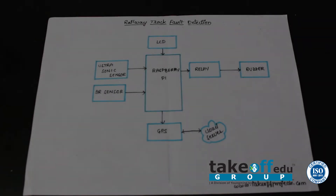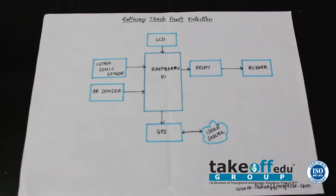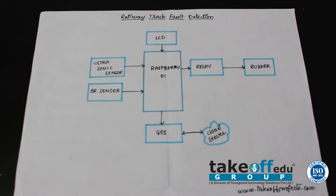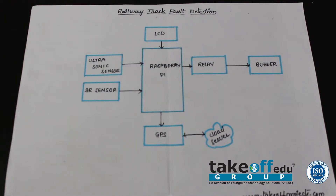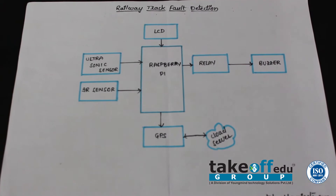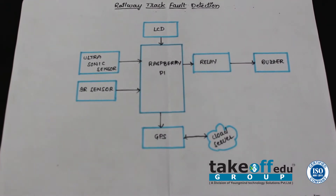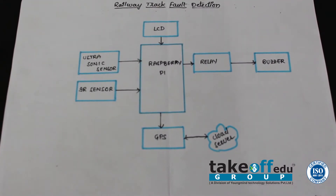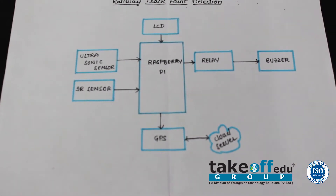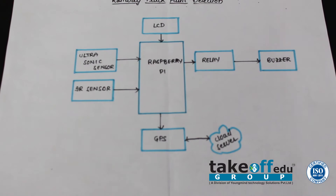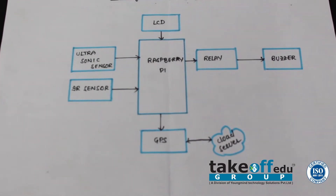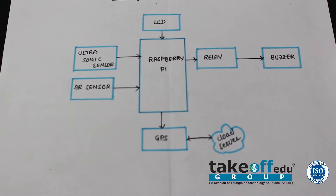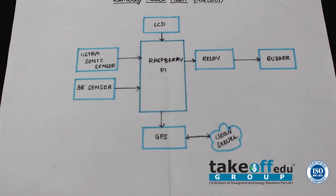Hello guys, welcome to Take Up Group. I am back with a new project. Our project title name is Velvet Track Fault Detection. Nowadays, we are hearing that train accidents often occur due to faults on tracks. It is necessary to check every time by the driver or operator whether there are any cracks on the track or not. If it is not done, it may lead to accidents. So to overcome those issues, we have proposed this project.